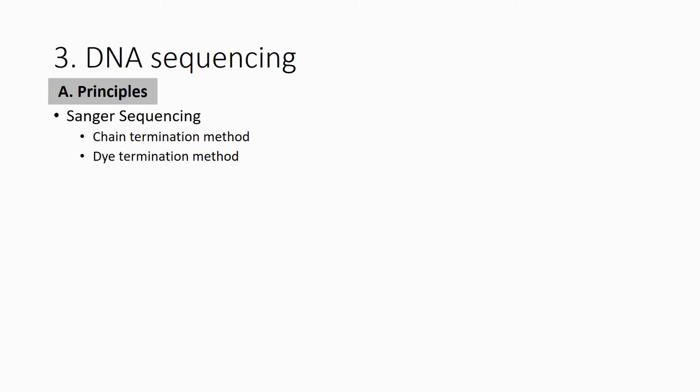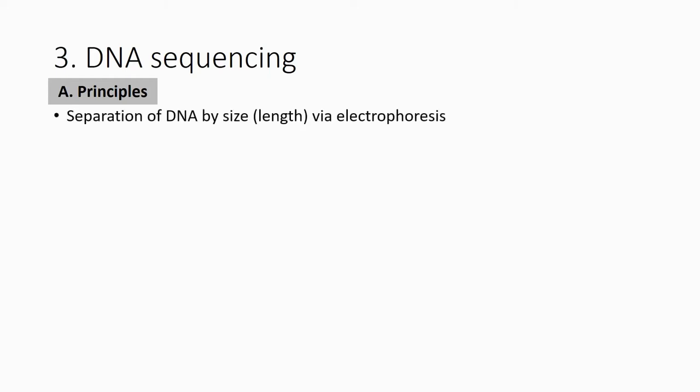For Sanger sequencing, there are two methods. First, they developed the chain termination method. After that, they moved to the dye termination method. First they used the chain method, then the dye method. The principle is very similar. The way they get enough information for the sequence is similar. The only difference is how they read the output. For the beginning, I'll explain the chain termination method.